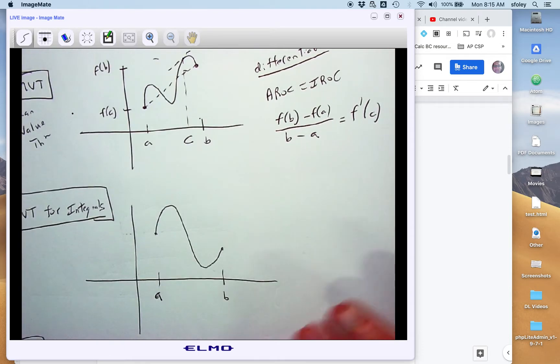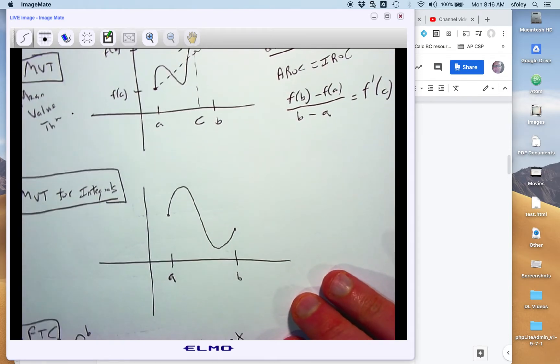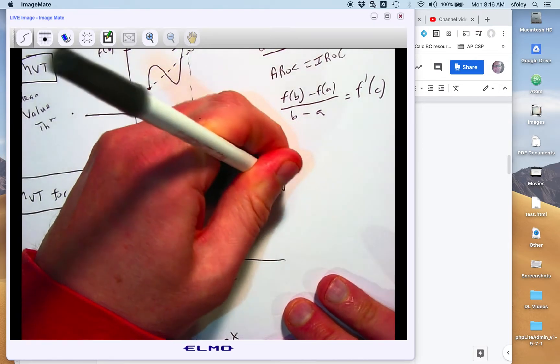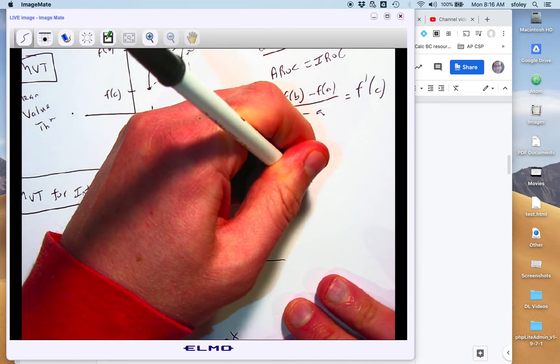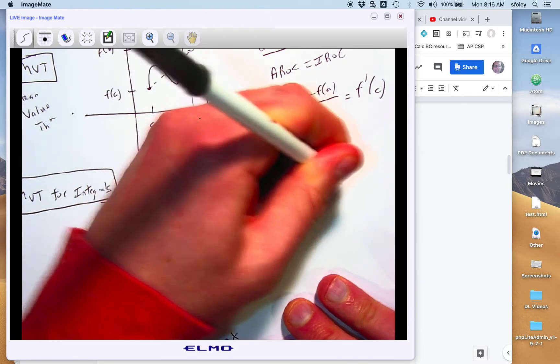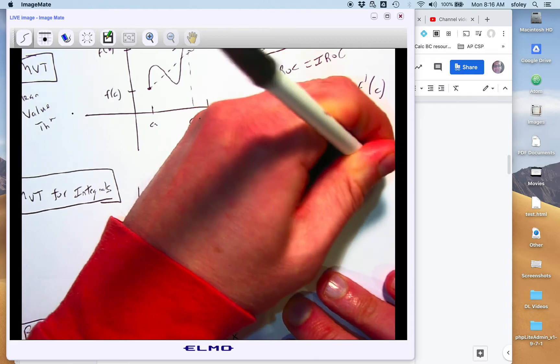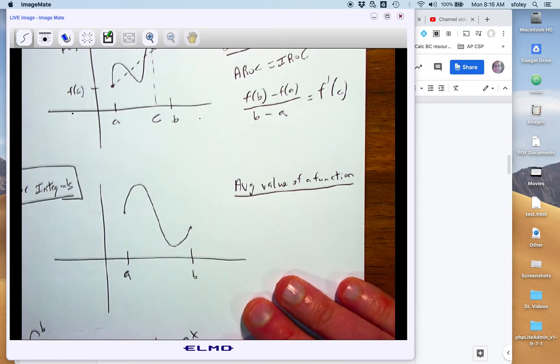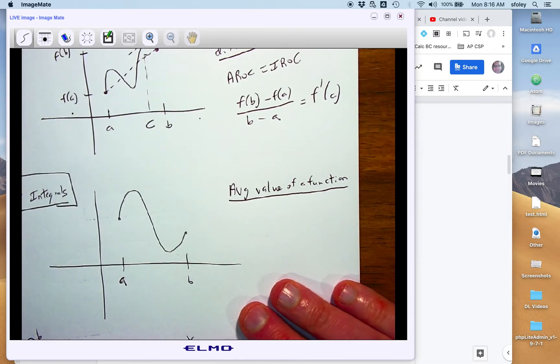Next one, a similar name, is the Mean Value Theorem for Integrals. And this has to do with the average value of a function. And this is easy to get confused with the AROC. So you always want to make sure you're reading it very carefully. If you're making a note sheet for the AP test, make sure these two things are clearly differentiated.